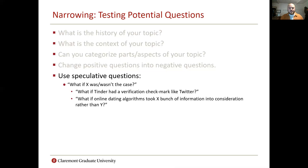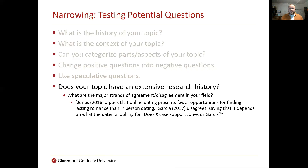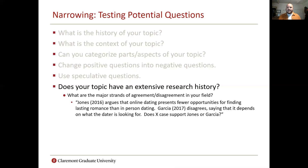Next, consider using speculative questions: what if X was or was not the case? What if Tinder had a verification check mark like Twitter does? Or what if online dating algorithms took this information into consideration rather than that? There's something imaginative that goes into all of this — it also gets at evaluating why these questions haven't been asked before. Does your topic have an extensive research history as it is? Very rarely are we going to be blowing the lid off something brand new. So, what have other people said about your topic? What are the major strands of agreement and disagreement in your field? For example, Jones argues that online dating presents fewer opportunities for lasting romance than in-person dating, and Garcia disagrees. Does the case you're looking at support Jones or Garcia, or is there a reason to lean towards one or the other? Thinking about how your work situates among the existing canon of scholarship is really important.